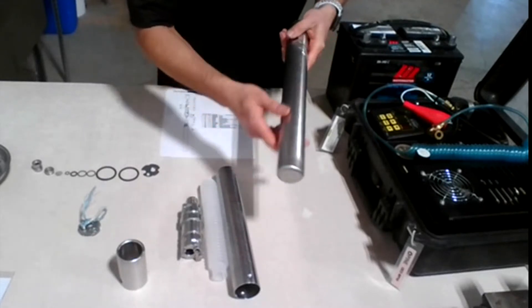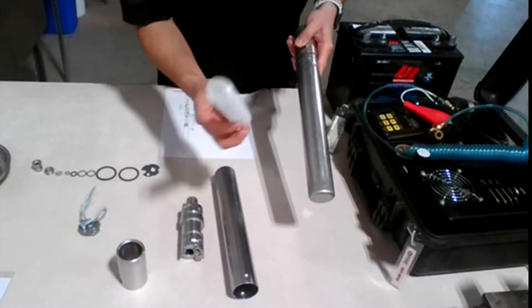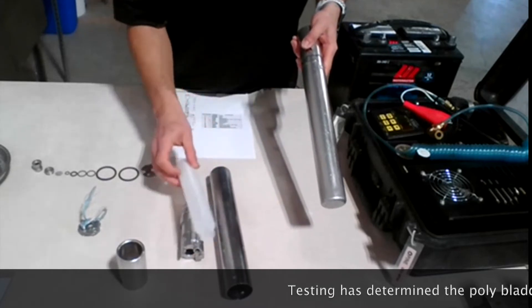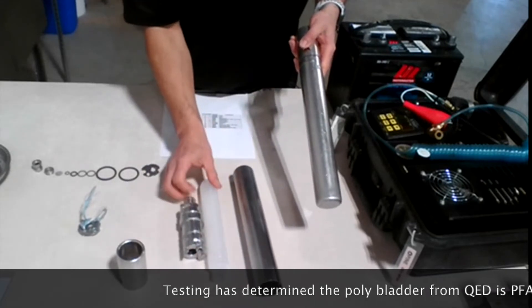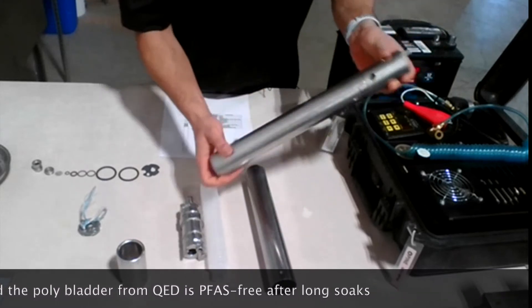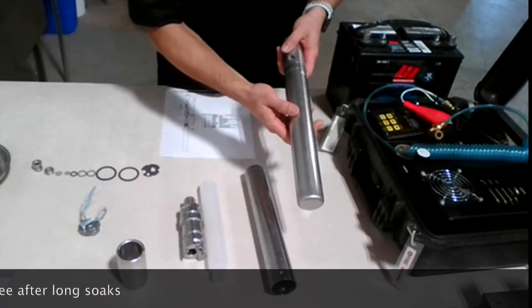It also has a housing that encloses the flexible bladder, which is, in this case, this one here. As you can see, this one is made from PTFE or polyethylene, just to ensure durability and sample integrity.